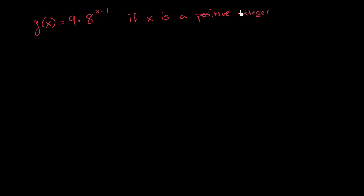So 1, 2, 3, 4, 5, on and on and on. So this is an explicitly defined function.